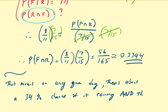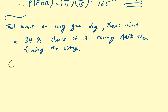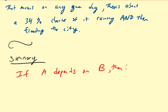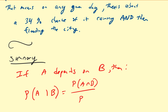In summary, this is talking about the dependence of events. If A depends on B, then the probability of A, assuming B has already occurred, is equal to the probability of A and B occurring divided by the probability of B. Note that the probability of B must not be equal to zero, because if B never occurs and A depends on B occurring, then A won't occur either. This is the general definition of a conditional probability.